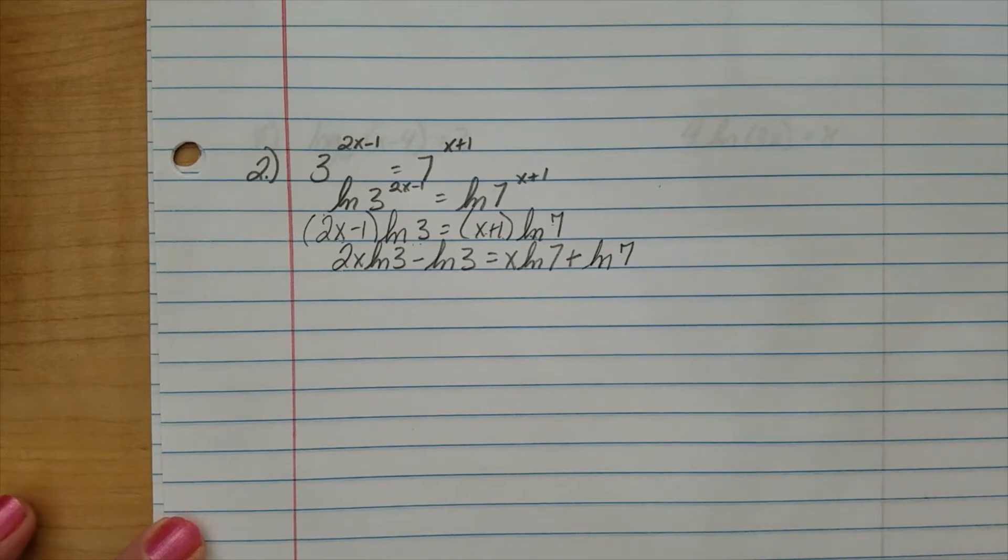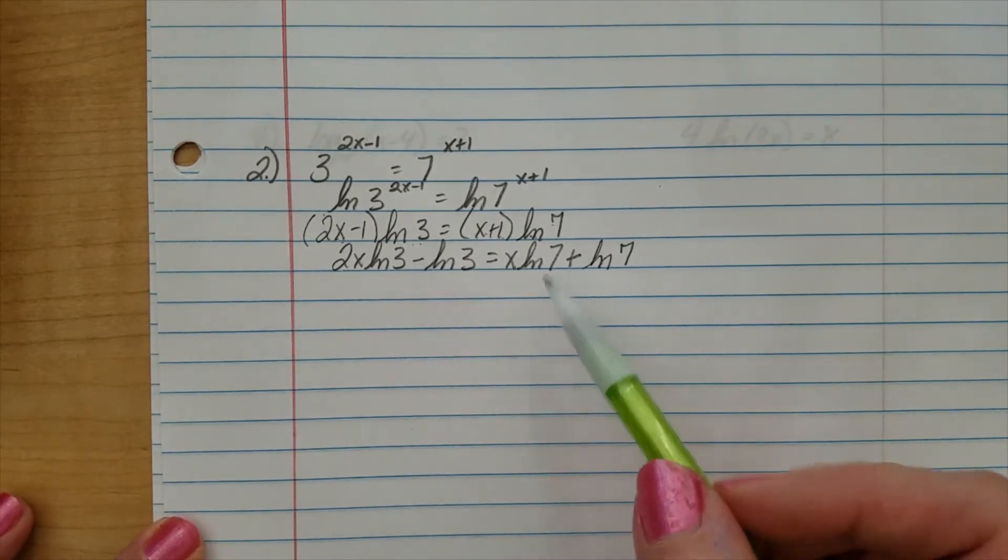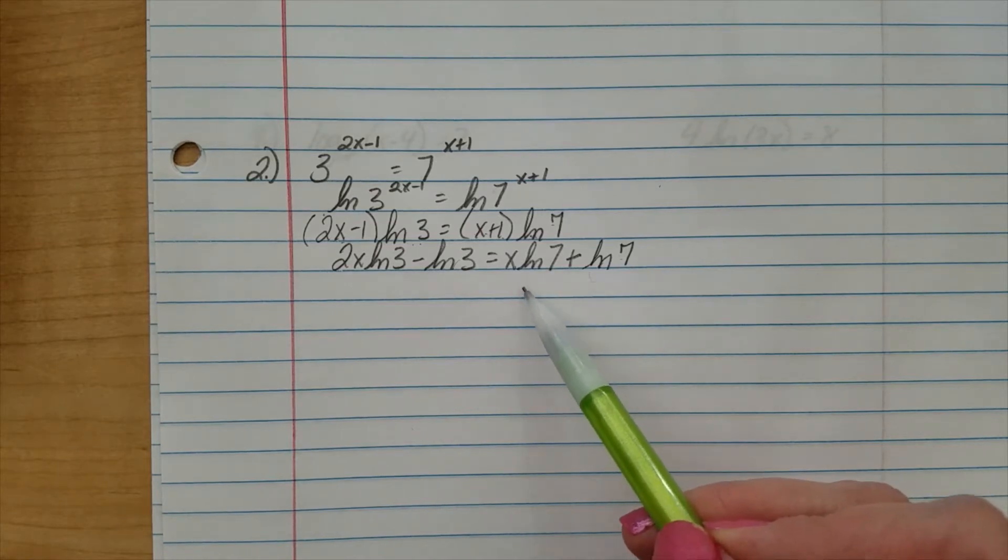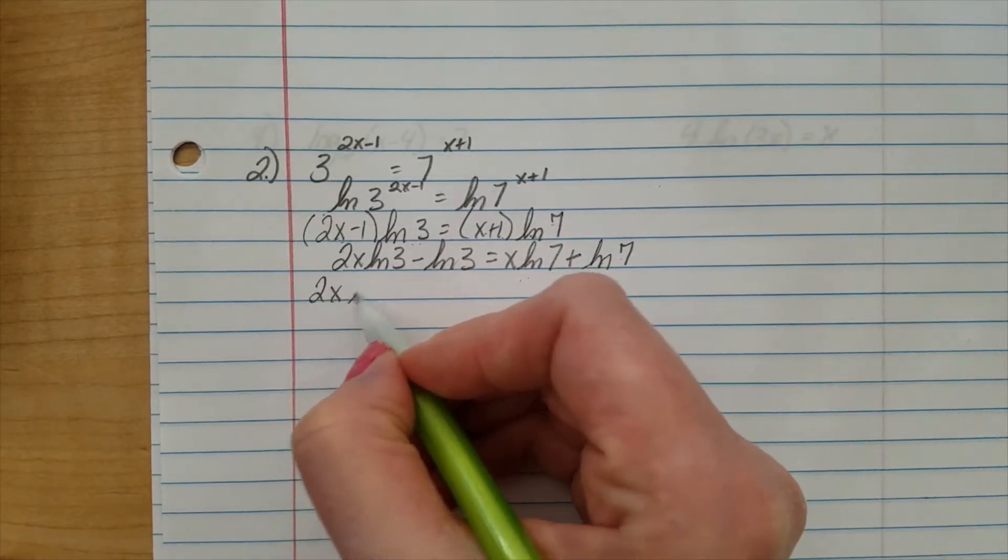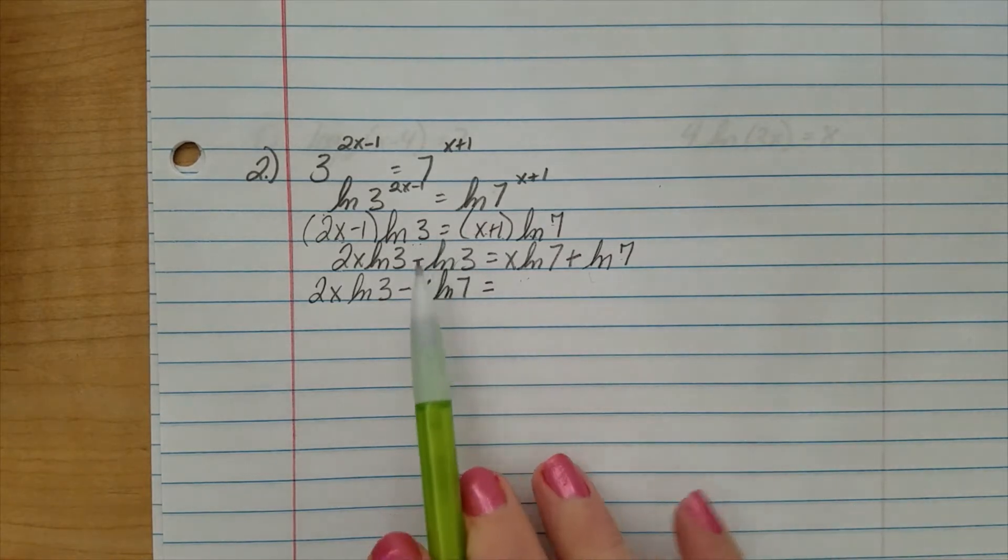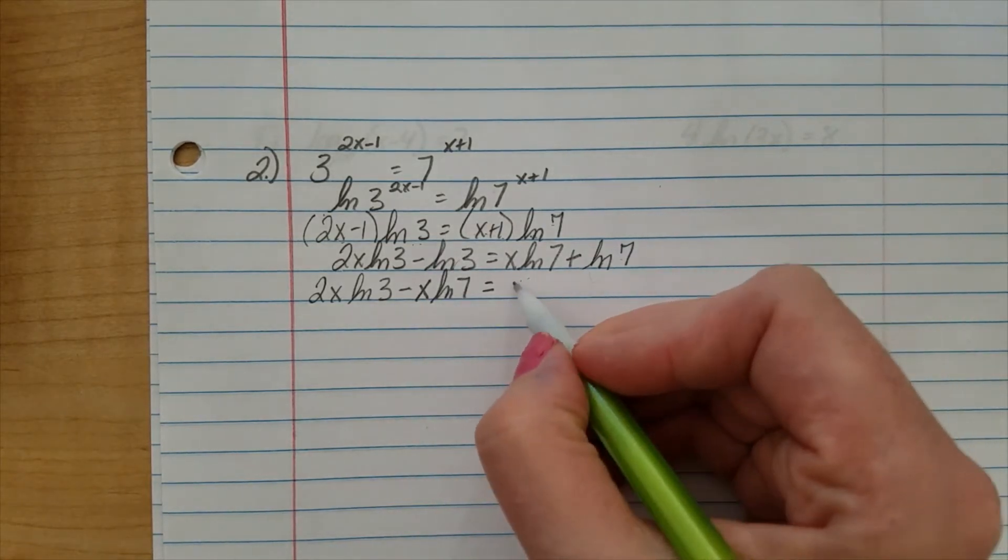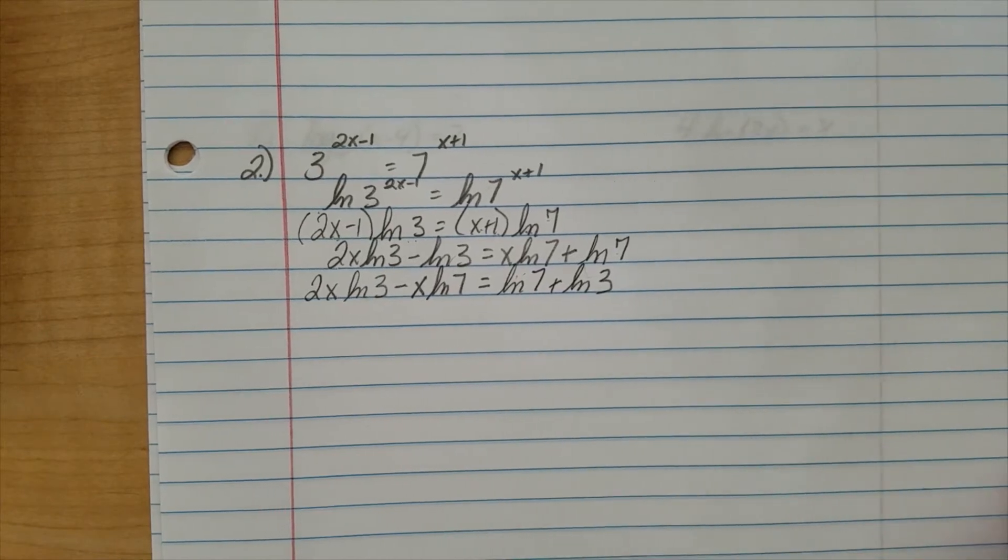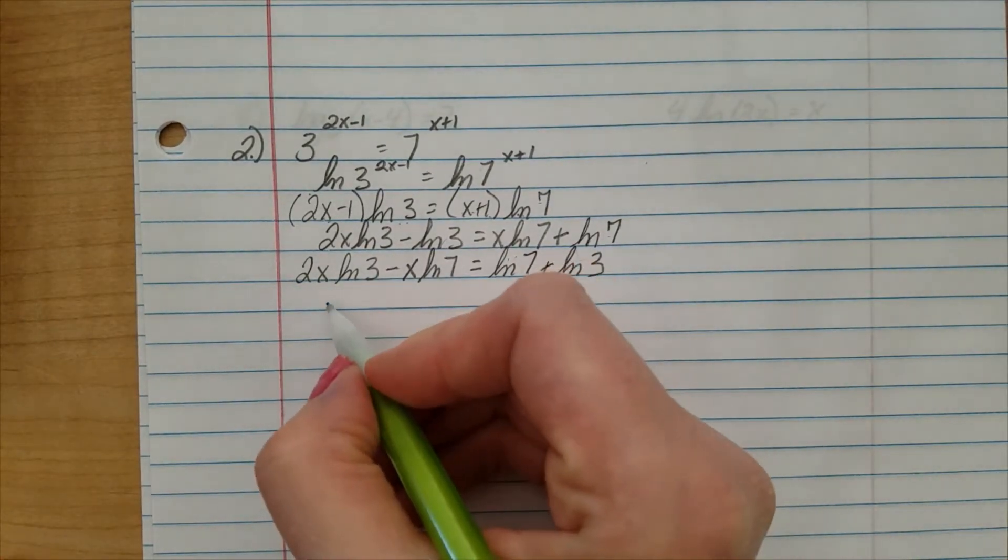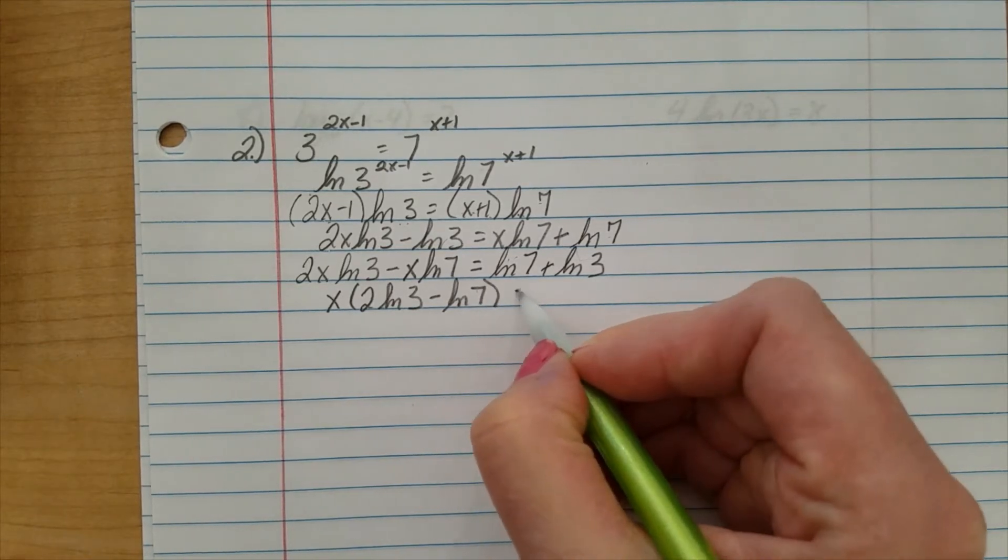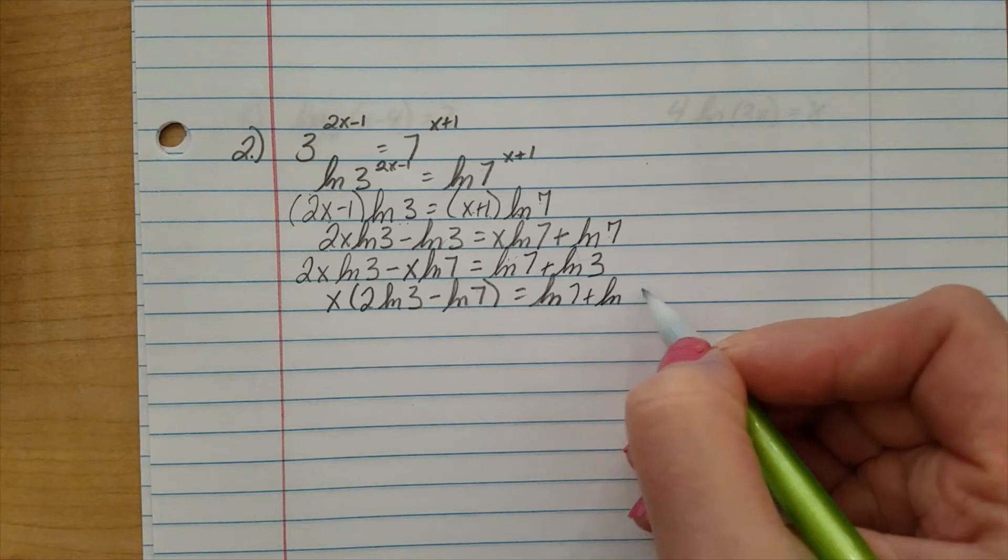Okay, I want to get all of my x's on one side of the equal sign and the constants on the other. Remember, natural log of 3 and natural log of 7, those are both constants. So, I'm going to, we're going to do this in one fell swoop. I'm going to subtract x ln 7 from both sides. I will get 2x natural log of 3 minus x natural log of 7. I'm going to add natural log of 3 to both sides. So, I will have natural log of 7 plus the natural log of 3. Now, let's go ahead and factor out the x. x times 2 natural log of 3 minus natural log of 7 equals natural log of 7 plus the natural log of 3.